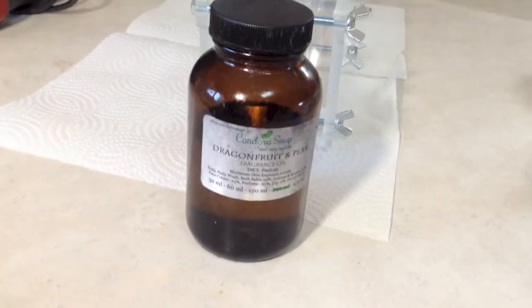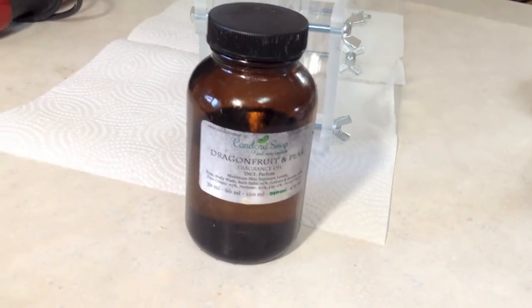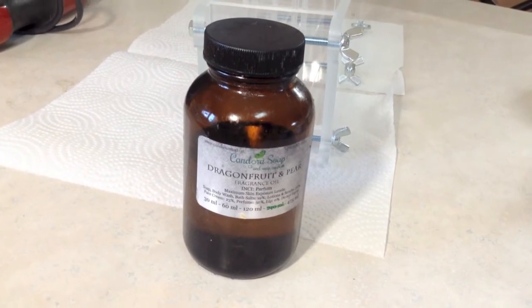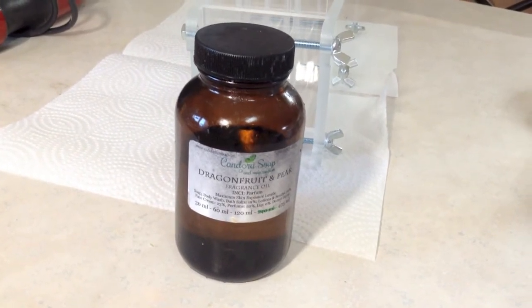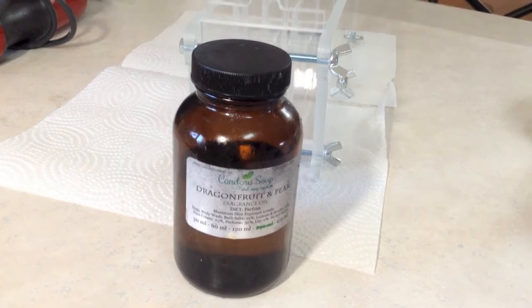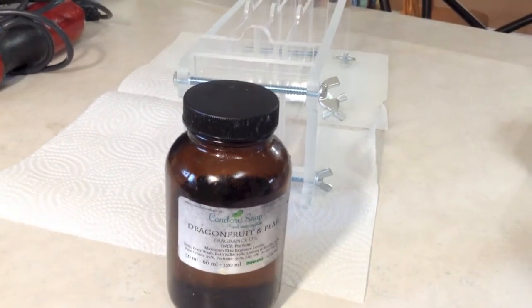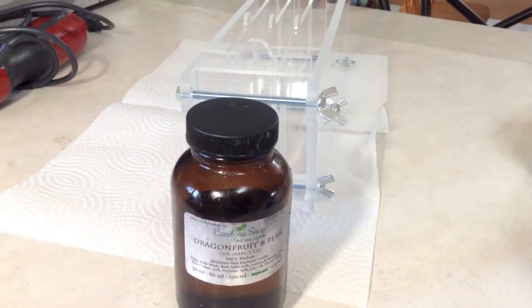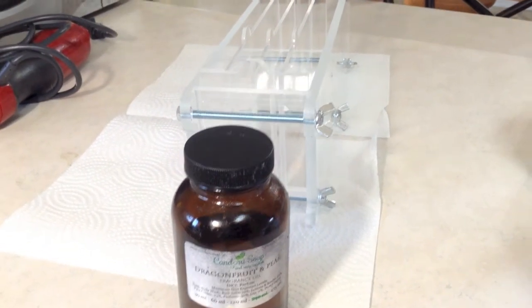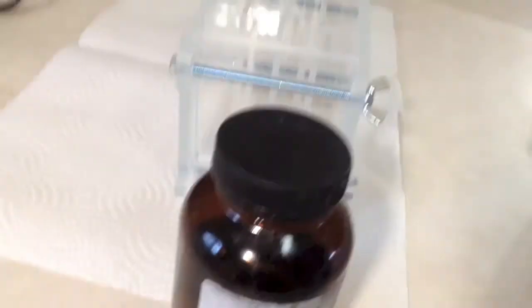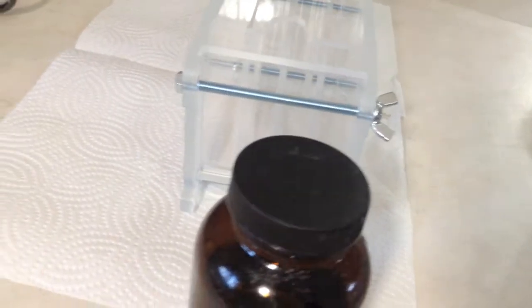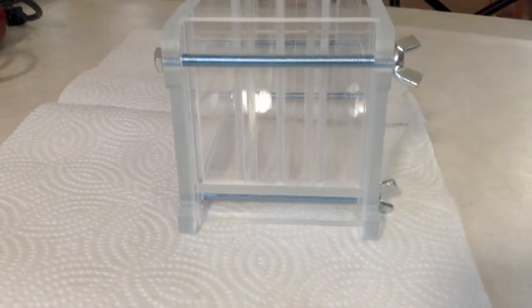Today's soap is going to be fragranced with dragon fruit and pear. It does not discolour, does not accelerate, and is just a lovely fragrance for a rainbow soap. This is going to be a different rainbow than usual. It's not going to be stripy per se, it's going to be a drop swirl and it's going to have vertical stripes, not horizontal.